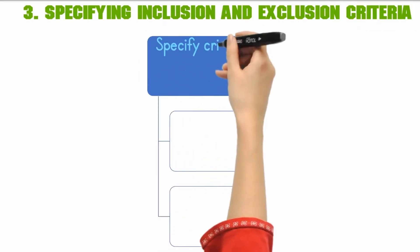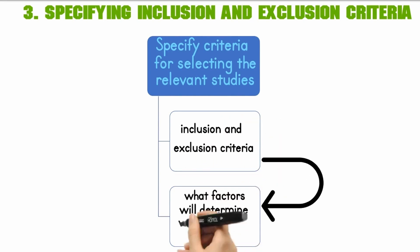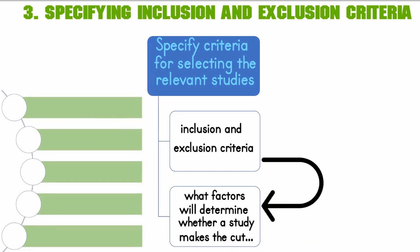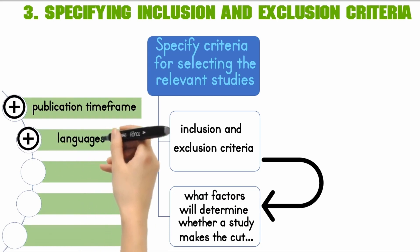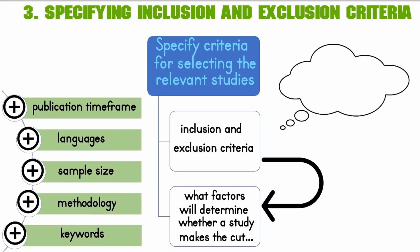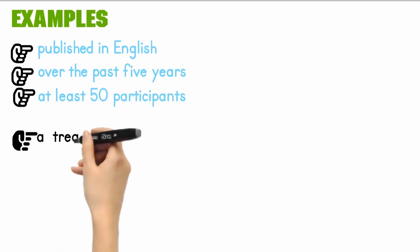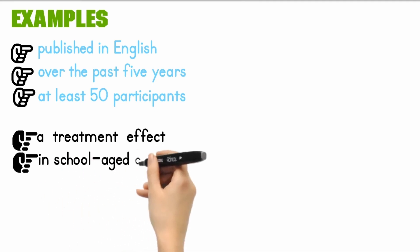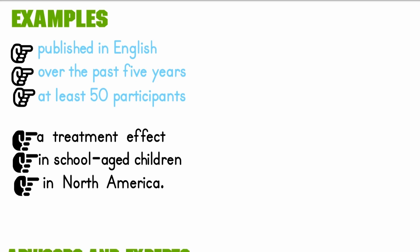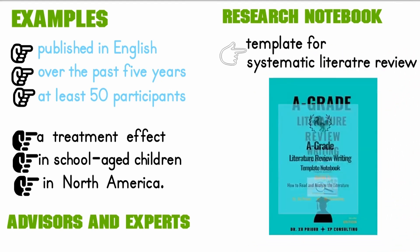Consulting a research librarian can help optimize your planned search approach. Next, you have to specify criteria for selecting relevant studies — inclusion and exclusion criteria. What factors will determine whether a study makes the cut? Think about things like publication time frame, languages, sample size, methodology, and keywords. For example, you could limit your review to randomized control trials published in English over the past five years with at least 50 participants, or specify that studies must examine a treatment effect in school-aged children in North America. Consulting with advisors and experts is recommended. I've put a link to my research notebook templates in the description section below.